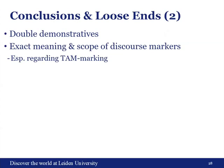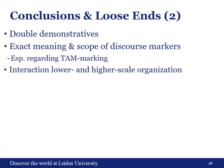I also need to look at the exact meaning and scope of the discourse markers, especially regarding possible TAM marking and whether that inhibits or promotes certain discourse markers, or whether it's all speaker preference. And I still want to look, if I have time, at the interaction of lower and higher scale or tier organization of discourse — for example, whether the use of conjunctions influences the structure of a paragraph. I also want to embed my findings into the information structure literature more, because I don't think I've done so enough yet.